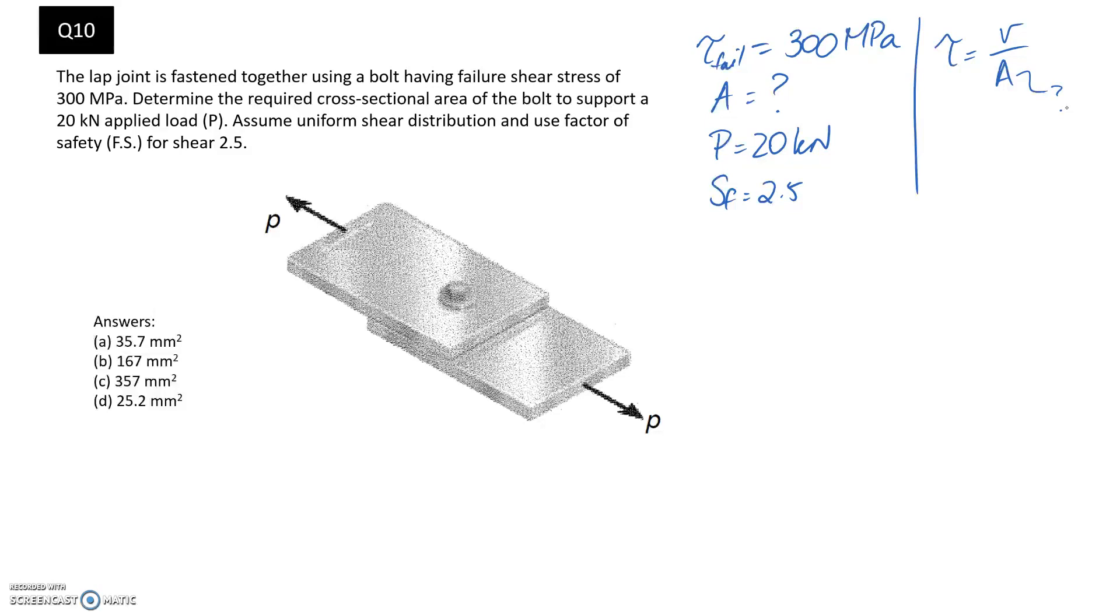So we're going to need two steps to find τ and to find V. To find τ, we want to find the allowable stress, and we're going to do that based on the failure stress and the safety factor. For V, the shear force, we should be able to get that from a free body diagram.